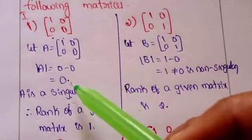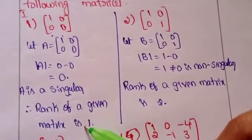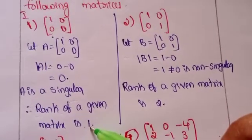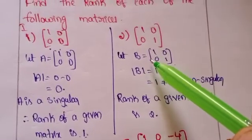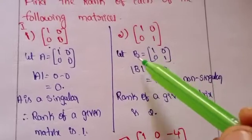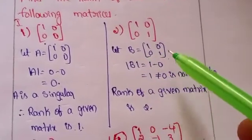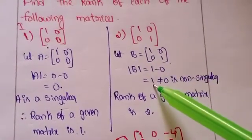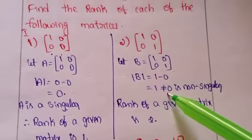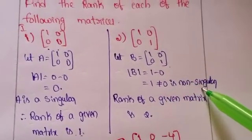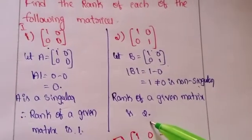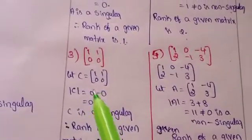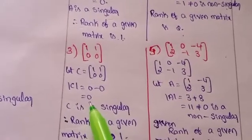Since the determinant is 0, the rank of the given matrix is 1. For the second problem, let matrix B have determinant equal to 1, which is not equal to 0. It is a non-singular matrix, so the rank is 2. Similarly, the next one also has rank 1 for the 2x2 matrix.